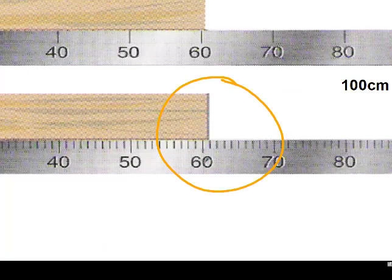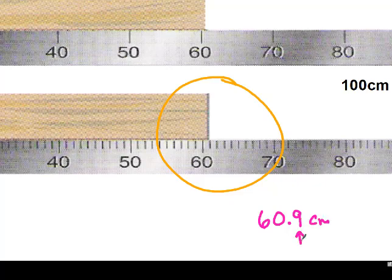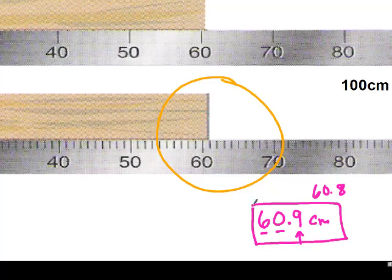We can see that we know for sure that it's 60-something. If it was right on this line it would be 61, but it's a little bit to the left of that line. So it's almost to that line, so I'm going to say it's 60.9 centimeters. This is the one I'm guessing because I don't know for sure it's 0.9. But I know that it's 6 and I know that it's 0 because it's not to the 1. Maybe 60.8, but the best answer is going to be 60.9 centimeters.